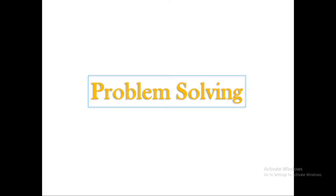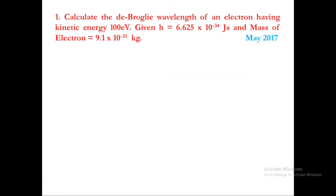Now let us go to particular problem solving. Problem 1: Calculate the de Broglie wavelength of an electron having kinetic energy 100 electron volts, given h equal to 6.625 into 10 power minus 34 joule-seconds and mass of electron equal to 9.1 into 10 power minus 31 kg. This question was asked in May 2017.